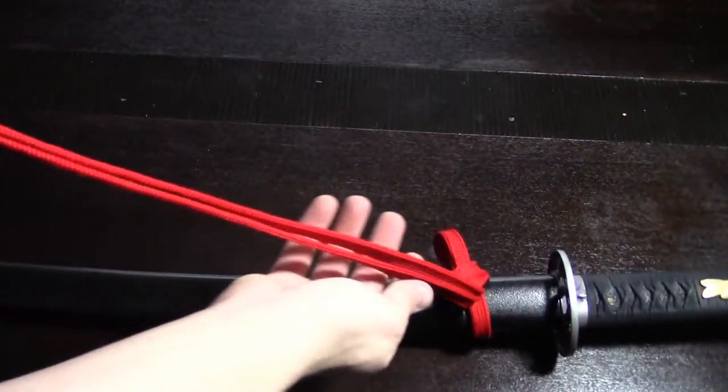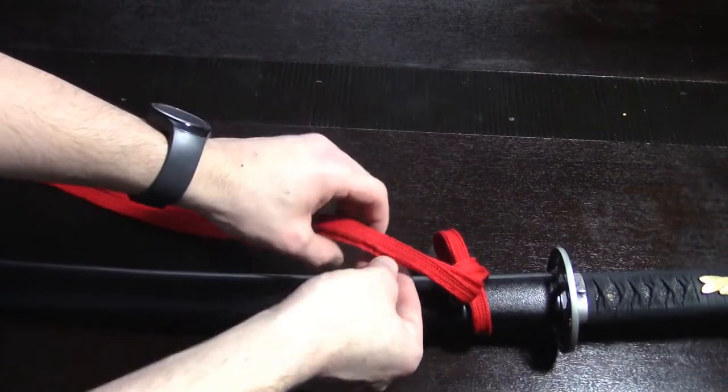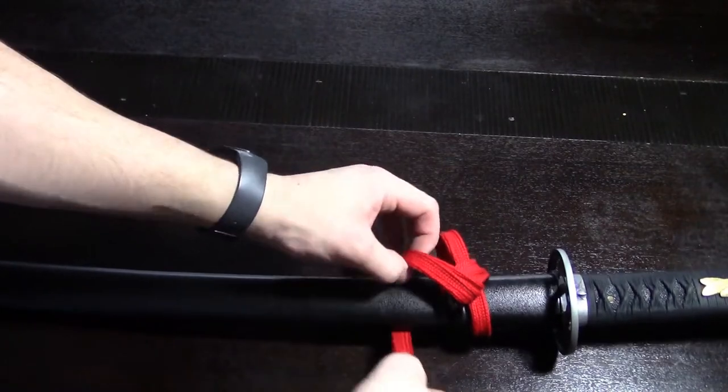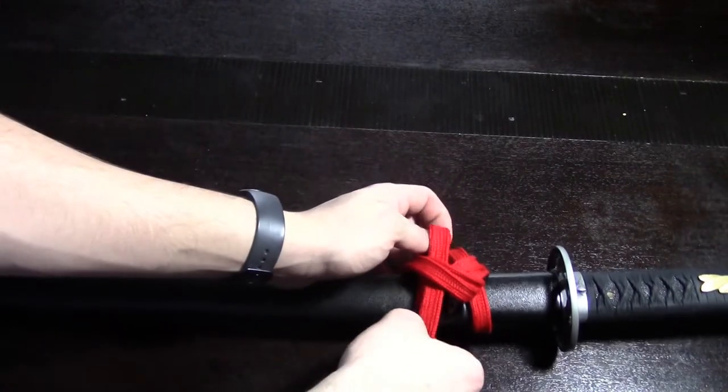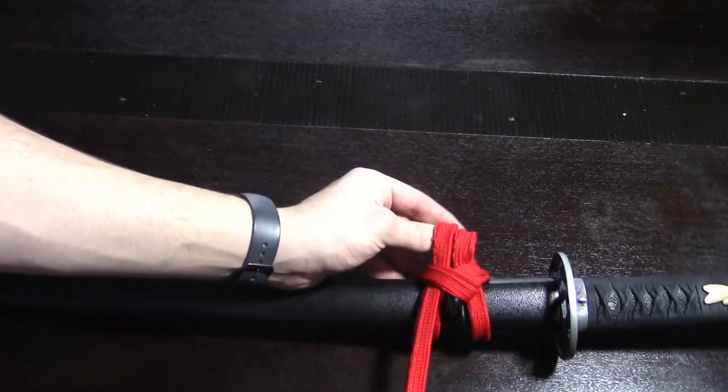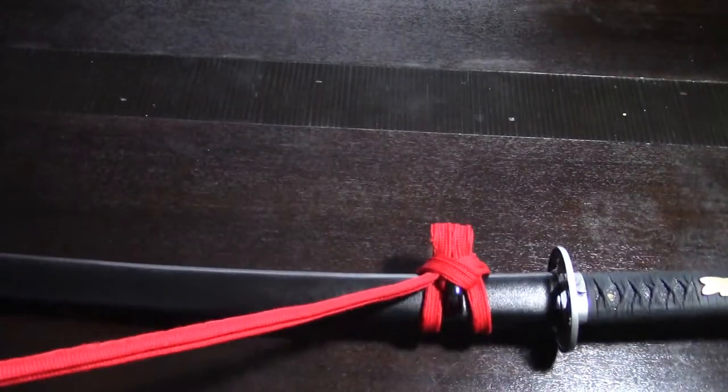Now to finish the Chomusubi or Butterfly Knot, you go around a second time, just like this. And now you have two loops.